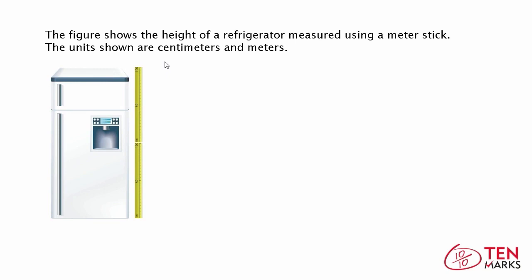Here's your last object you're going to measure. The figure here shows the height of a refrigerator measured using a meter stick. The units shown are centimeters and meters. The refrigerator is 2 meters long, or 200 centimeters long. Here's 100, and then another 100 centimeters, so that's 200 centimeters, or 2 meters.